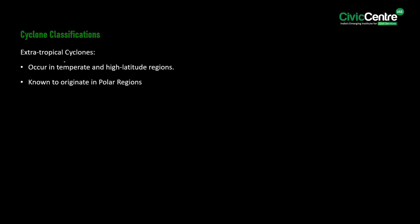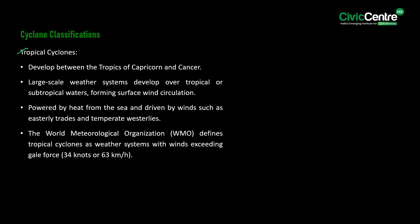Talking about cyclone classifications: firstly, extra-tropical cyclones occur in the temperate and high latitude regions and are known to originate in the polar regions. Then tropical cyclones develop between the Tropics of Cancer and Capricorn. These large-scale weather systems develop over tropical or subtropical waters, powered by heat from the sea and driven by winds such as easterly trades and temperate westerlies. The World Meteorological Organization defines tropical cyclones as weather systems with winds exceeding gale force.